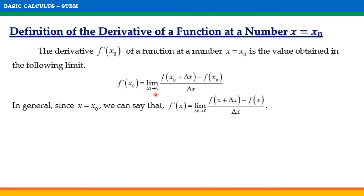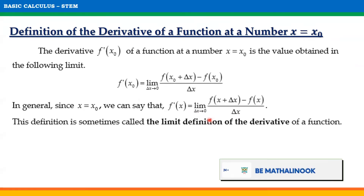In general, since x is equal to x sub 0, we can say that f prime of x is equal to the limit of f of x plus delta x minus f of x divided by delta x as delta x approaches 0. This definition is sometimes called the limit definition of the derivative of a function.